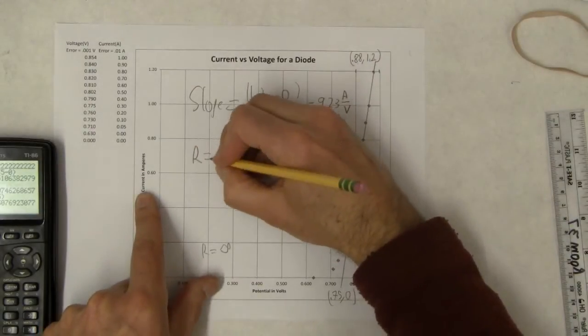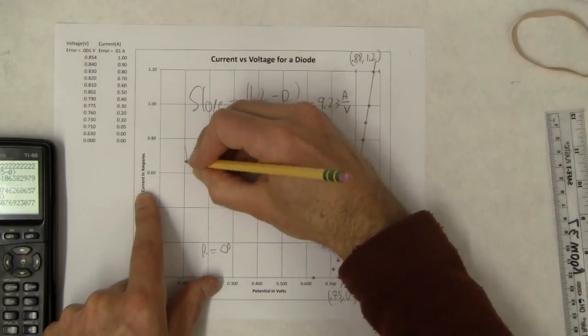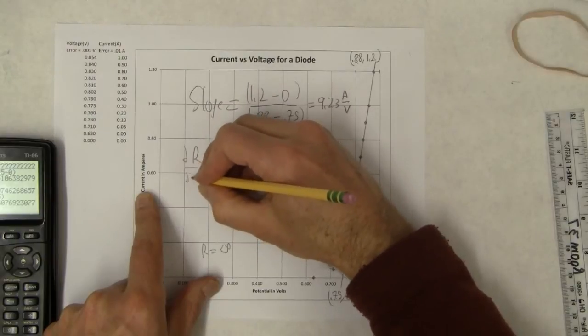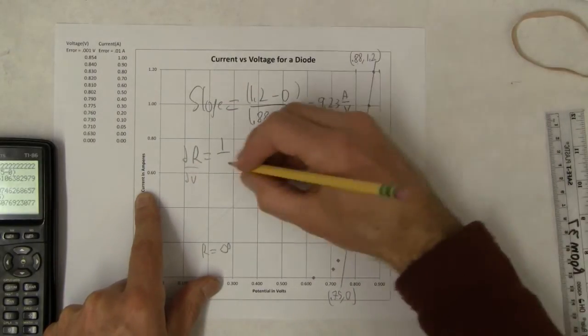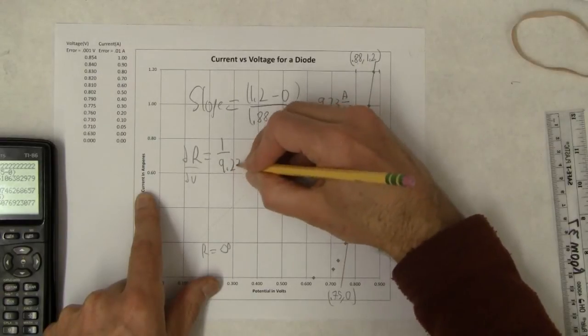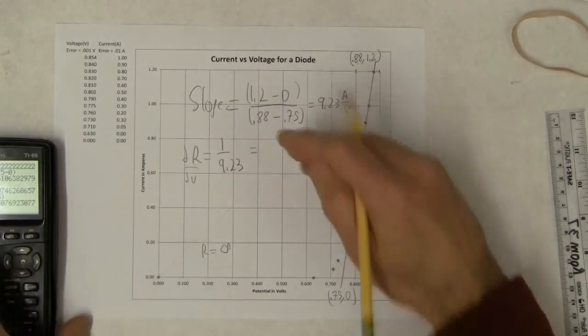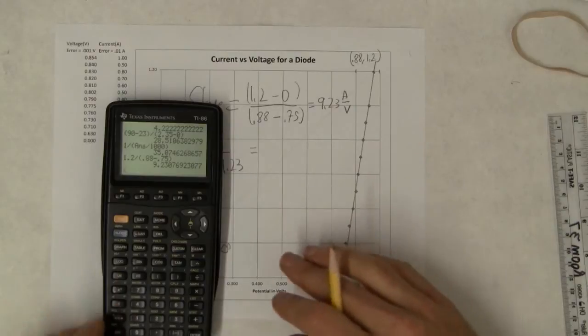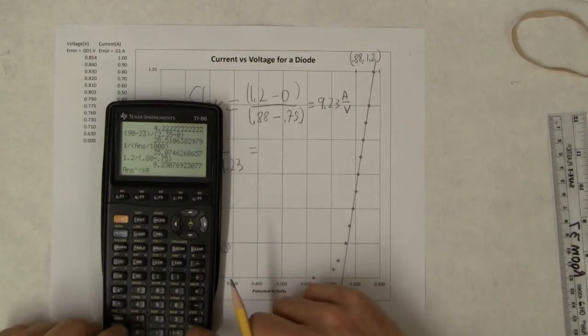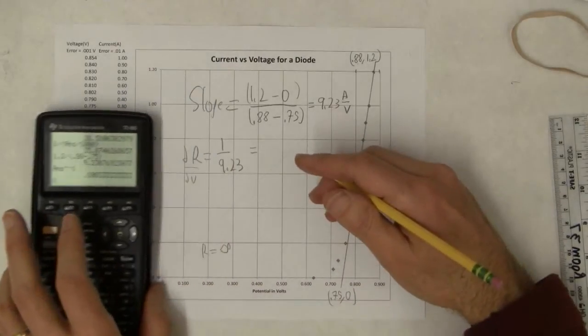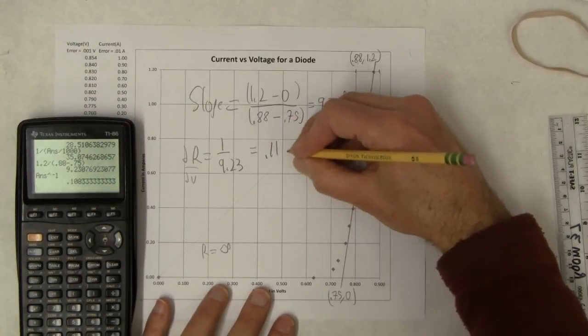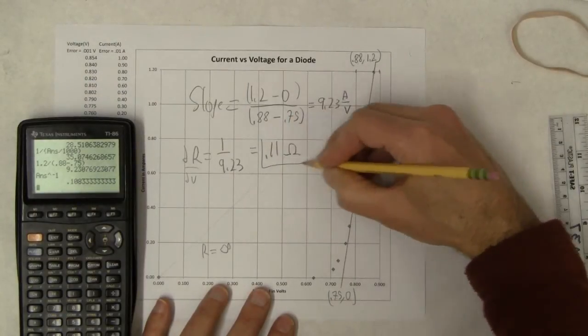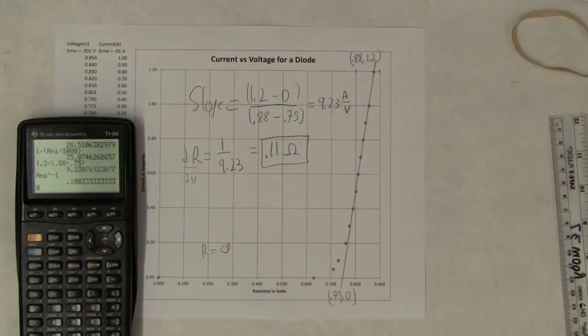So the resistance is 1 over, this is actually the differential resistance, dV over dI. The differential resistance is 1 over 9.2. I can just take that and raise it to be negative 1, 0.11, roughly. I got 0.108.